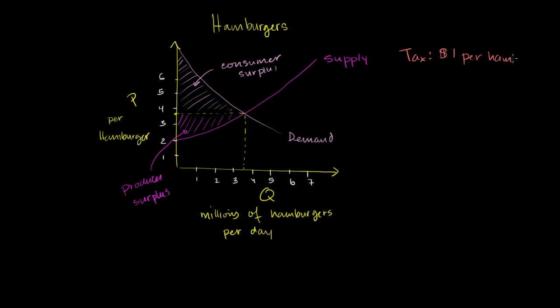Let's think about what this does to the surplus, the price at which transactions occur, and what people pay versus what they receive. Looking at the supply curve: in order to get someone to produce the very first hamburger, they need at least $2, because that's their opportunity cost. The more hamburgers you want suppliers to produce, the more you have to pay for those incremental hamburgers, because they start using resources less efficiently suited for hamburger production.